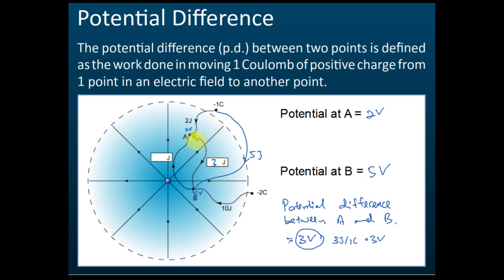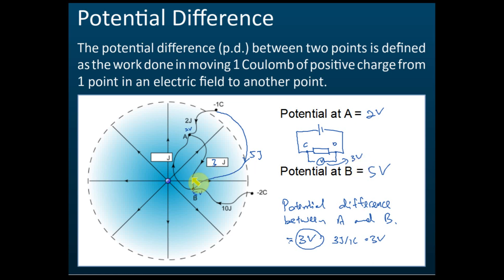That is what potential difference means — if you move one coulomb of charge from point A to point B, you do 3 joules of work, so the potential difference is 3 volts. In a circuit, if I say two points C and D have a potential difference of 3 volts, it means moving one coulomb of charge from C to D requires 3 joules of work. Also remember: the more work done, the faster the charge flows.